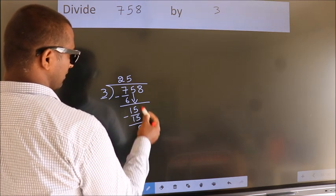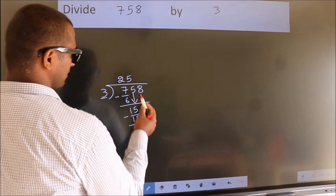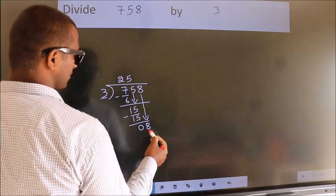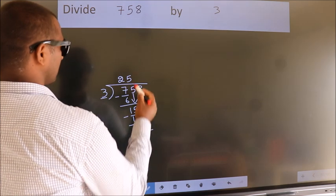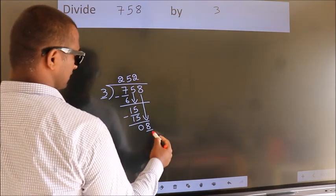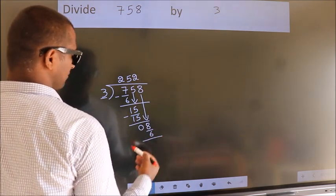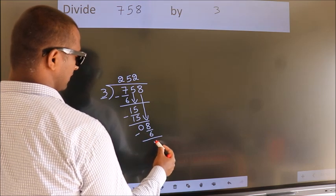After this, bring down the beside number. So 8 down, so 8. A number close to 8 in the 3 table is 3 times 2 equals 6. Now we subtract. We get 2.